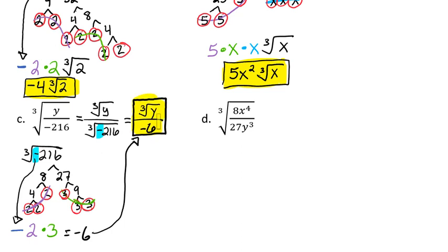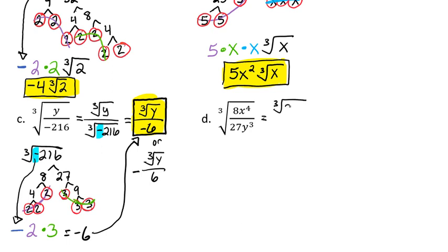This could also be written as negative cubed root of y over 6 as well. Let's do another quotient example with variables — multiple variables this time. Here we have the cubed root of 8x to the 4th divided by 27y to the 3rd. Just as we did on the last problem, we're going to split this apart as the cubed root of 8x to the 4th divided by the cubed root of 27y to the 3rd.